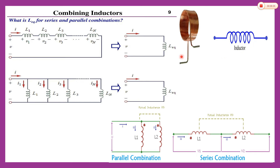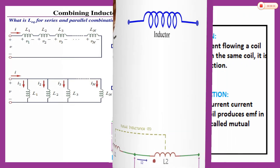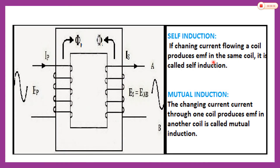This is the symbol of an inductor — simply an insulated coil. Now I will show the definitions of self-induction and mutual induction. Self-induction means if the changing current flowing through a coil produces EMF in the same coil, it is called self-induction. When the changing current through one coil produces EMF in a neighbouring coil, it is called mutual induction.